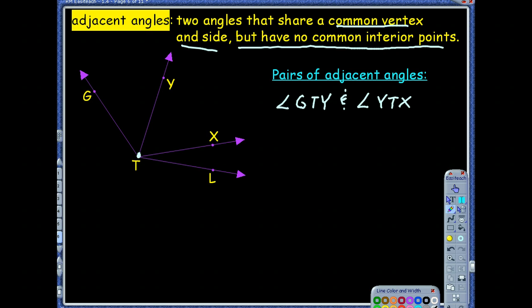So this angle and this angle, they have that vertex that they share in common, a side, and all the interior points here and all the interior points here do not match up. They're all unique.